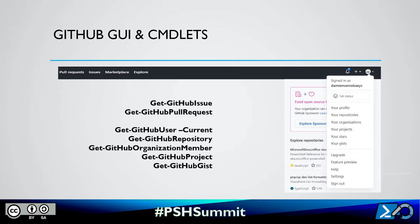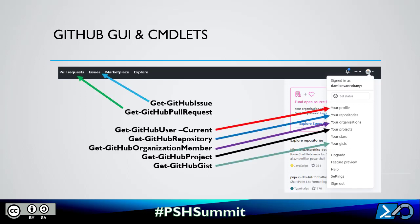The PowerShellForGitHub module is composed of different cmdlets. For instance, we have Get-GitHubIssue allowing you to manage issues, Get-GitHubPullRequest allowing you to manage pull requests. To get information about your profile, you will use the Get-GitHubUser cmdlet with the -Current parameter. To get information about your repositories, you will use the Get-GitHubRepository cmdlet, and so on. There are many cmdlets available and they are always working on it to add everything you can manage on GitHub.